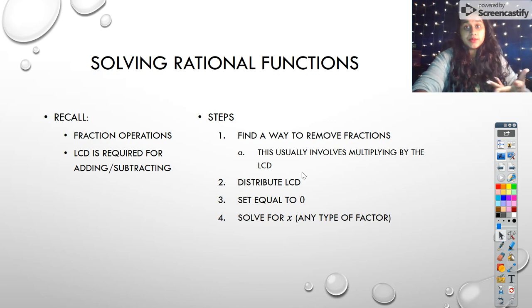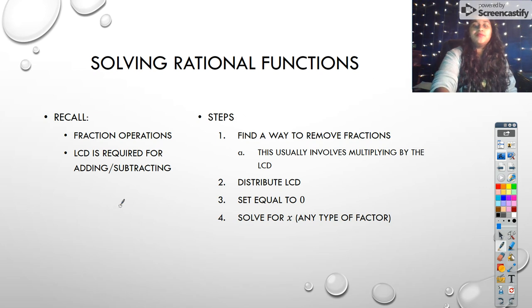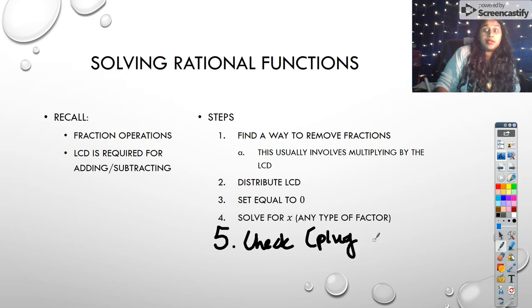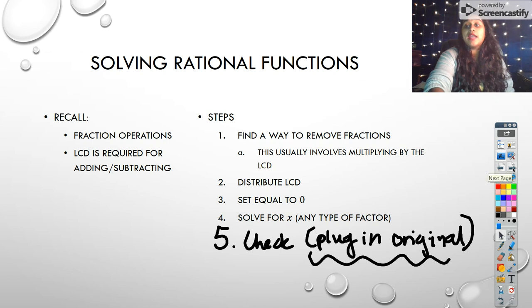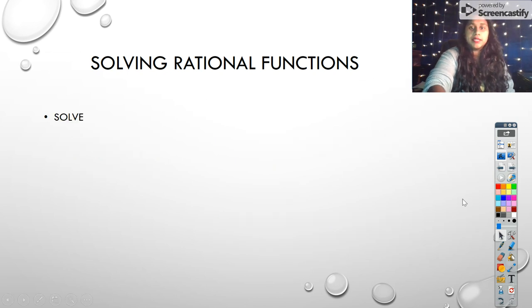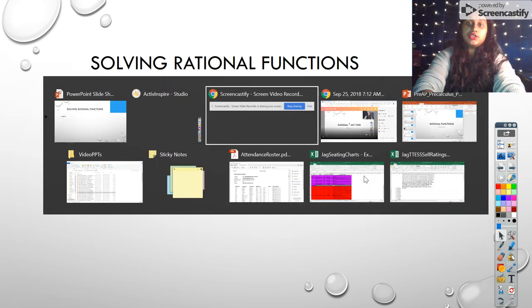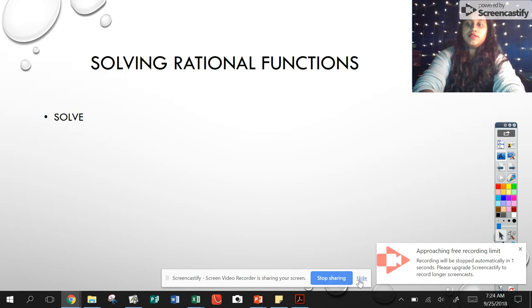Remember sometimes with rationals, we can get extraneous solutions. So technically there's a hidden step five where we would have extraneous solutions. And that means check for them. So what does that mean? Plug in your numbers into original equation. And if one of them returns a false statement, that means that was the extraneous solutions, just like we did with radical functions. Can't talk today. So I do have a question for us. I have two actually, but I'm going to go ahead and see you in the next video.